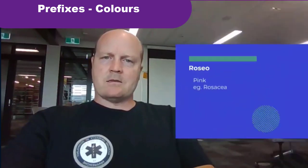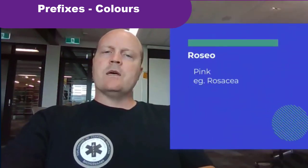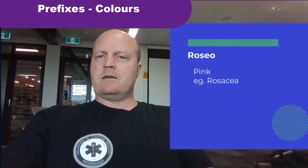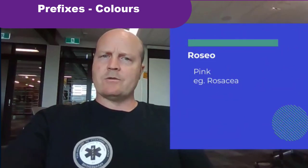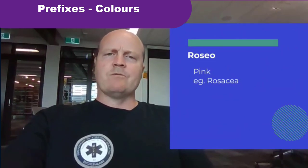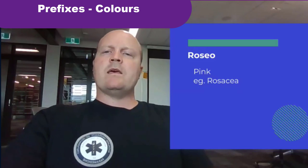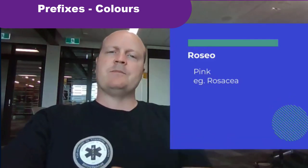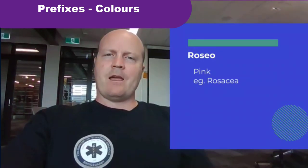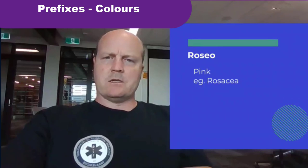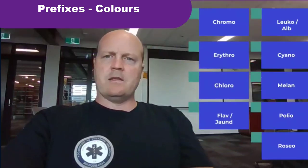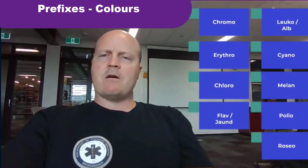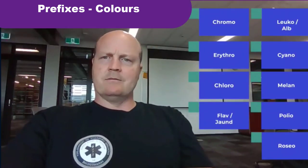Lucky last — 'rosio' is pink, how lovely! Just like a rose. And rosacea is when we get an abnormal pink tinge to our skin. That brings us to the end of our prefixes for color. Good work team!